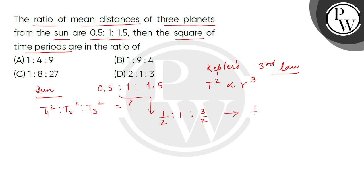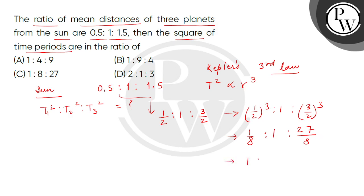When we take the cube, we get (1/2)³ : 1³ : (3/2)³, which gives us 1/8 : 1 : 27/8. Now multiplying throughout by 8, we get 1 : 8 : 27. So the correct answer will be C. Thank you.